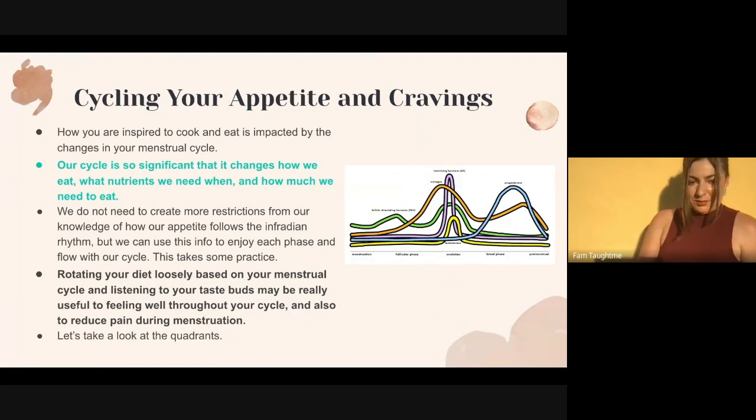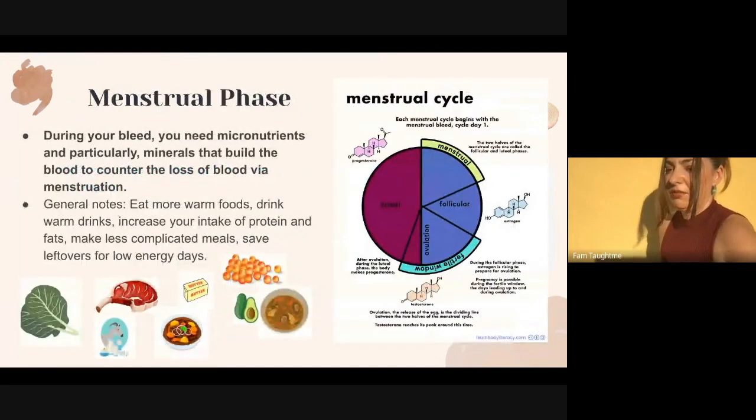This takes practice because we're so used to diet culture restriction and other negatively associated issues. Food has so much culture and joy contained within it. Rotating your diet loosely based on your menstrual cycle, maybe your ancestral foods, and listening to your taste buds while becoming more body literate gives you a framework for understanding what your body might be asking you. This helps your quality of life and experience of menstruation, especially in terms of reducing pain.